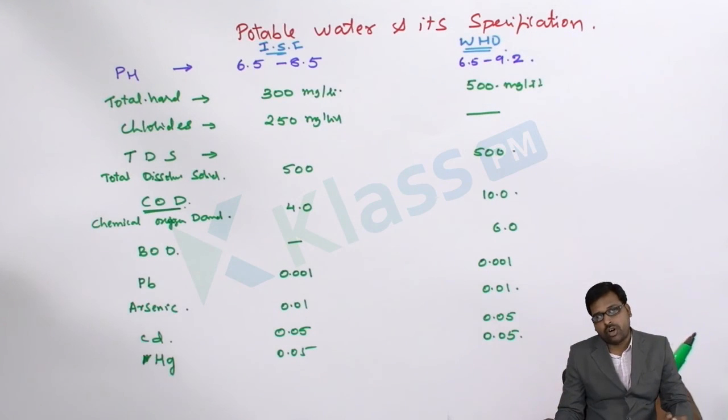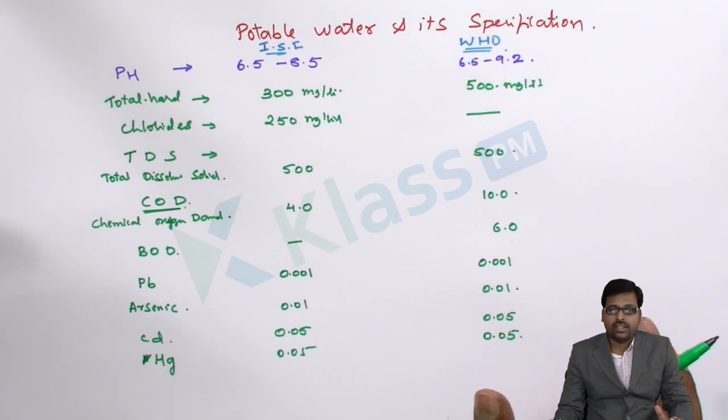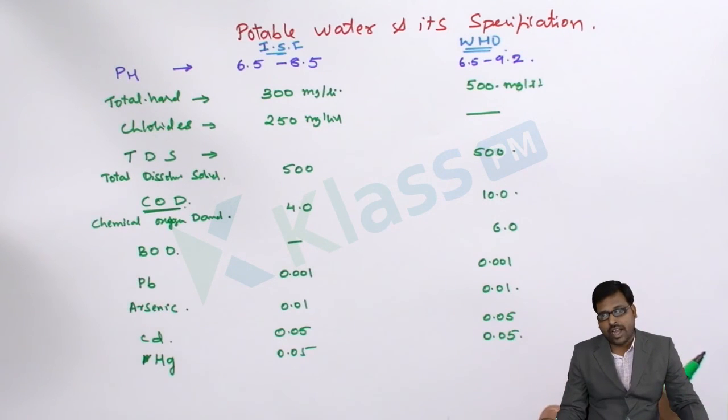So that is the reason the potable water should contain mainly these specifications and the local municipality should take care about these standards and specifications. Accordingly they need to plan, they need to filter out, they need to use different types of methods to remove all these ingredients. And remember if a question comes in your exam: does the hardness of water or the hard water be potable or not.